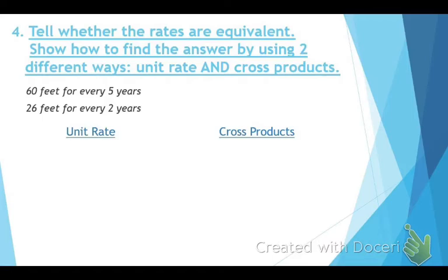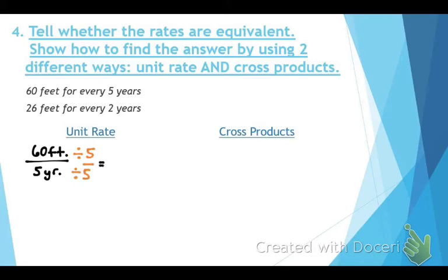Write the first rate as 60 feet per five years. To find the unit rate, we need the denominator to be one, so divide both by five. That gives 12 feet per one year.